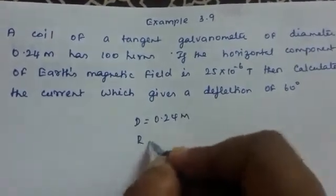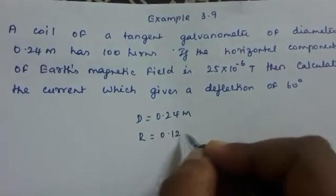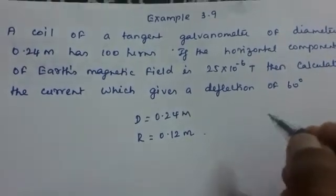So what is the radius? Radius is equal to 0.24 divided by 2, that is 0.12 meter.